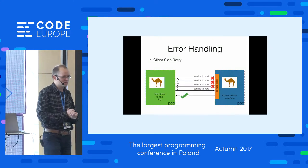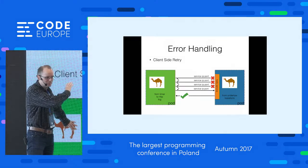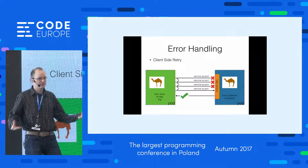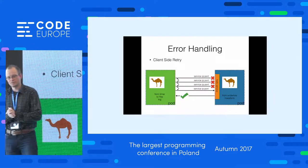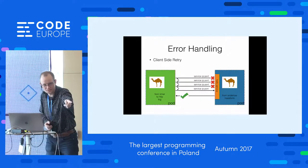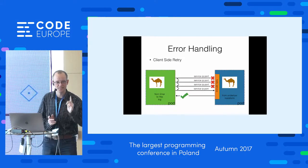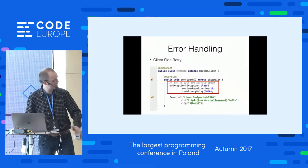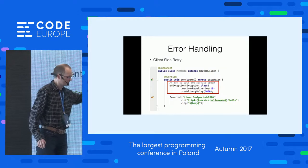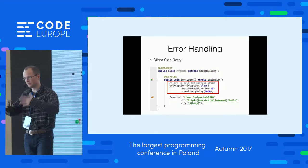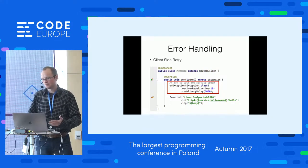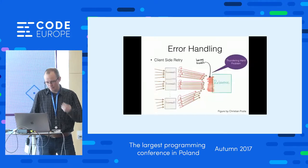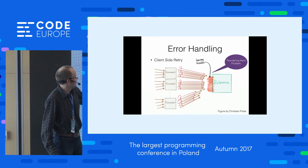We saw that errors can happen. From the client side, you can use retries — when I call a service and it fails, I wait a bit and try again, and eventually it might work. In Camel, you configure this with "onException" — you can say "try at most ten times and wait one second between attempts." However, this can lead to the thundering herd problem: if a service is under stress and all its clients keep retrying, they add more and more load and the service can never recover.